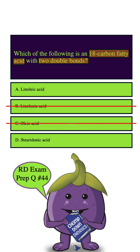How about D? Stearidonic acid is also an 18-carbon fatty acid, but it has four double bonds. So we can safely eliminate this answer choice as well, leaving us with A, and that is indeed the correct answer.